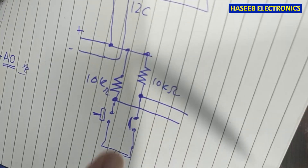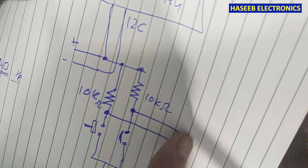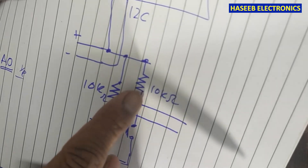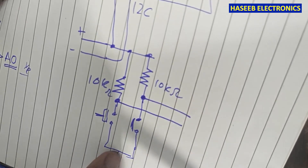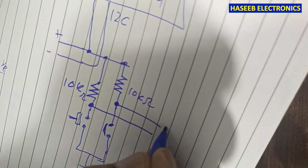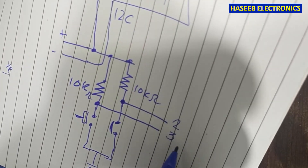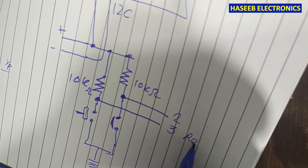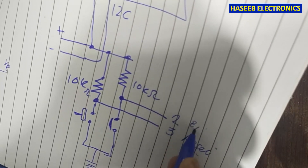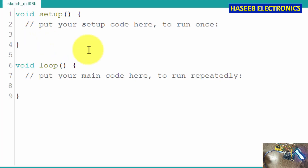Normally when we don't press the button these are high. When we press the button, ground is provided to the output. We are connecting to pin number 2 and pin number 3. At pin 3 we are providing the reset button. This is an event counter — this is the circuit.